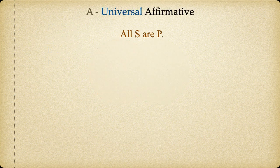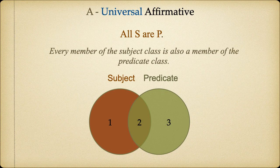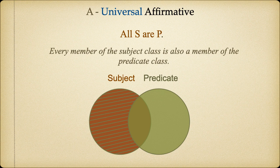Now, let's apply shading to indicate the meaning of an A proposition. This proposition tells us that every existing member of the subject class is also a member of the predicate class. Thus, there can be no non-predicate subjects. By shading out Region 1, essentially eliminating everything from that region, we demonstrate the meaning of the A proposition. Every remaining member of the subject class is also a member of the predicate class.